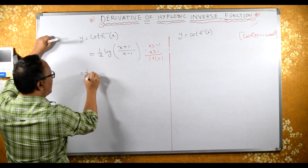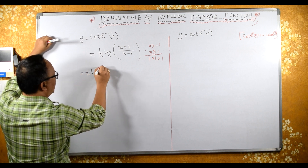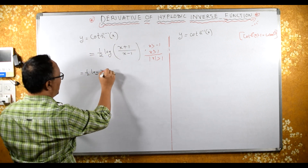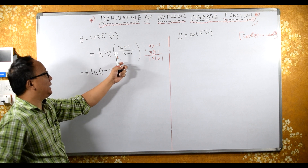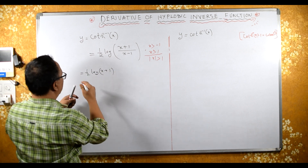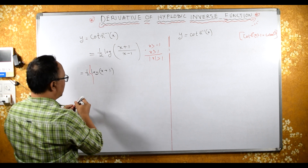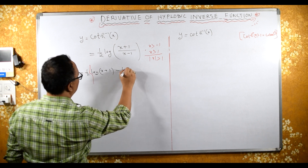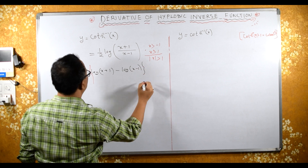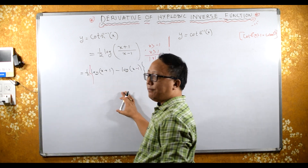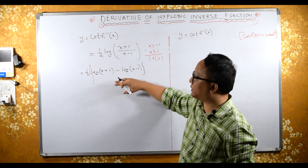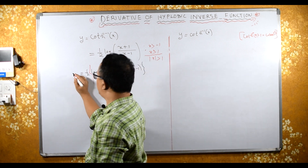This is the same as half times log of x plus 1 minus log of x minus 1, because log of m by n is the same as log m minus log n. This is now my y.